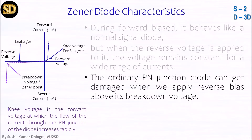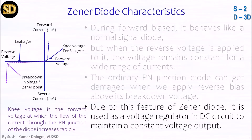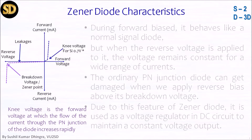On the other hand, ordinary PN junction or rectifier signal diodes can be damaged because of the very large current flow at breakdown. But this Zener diode, because it is heavily doped, can sustain its property. The moment voltage drops below the Zener point, it will behave like a normal diode again. But when voltage increases, it will work again as a Zener diode. Due to this feature, it is used as a voltage regulator in DC circuits to maintain a constant, regulated voltage output.